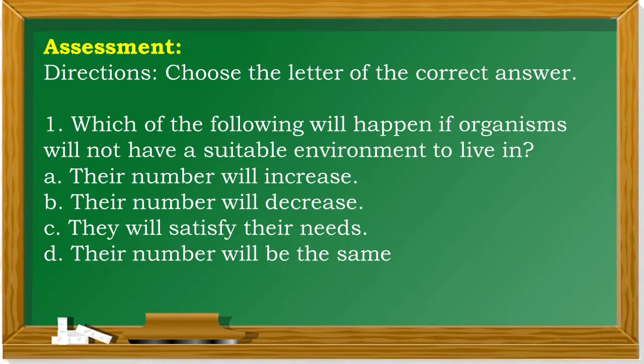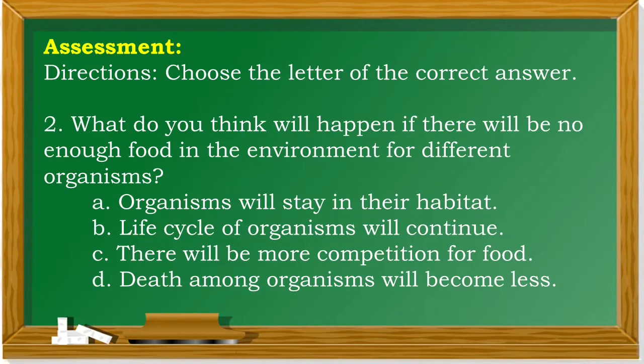Now let us answer the assessment. Number 1: Which of the following will happen if organisms will not have a suitable environment to live in? A. Their number will increase. B. Their number will decrease. C. They will satisfy their needs. D. Their number will be the same. The correct answer is letter B. Number 2: What do you think will happen if there will not be enough food in the environment for different organisms? A. Organisms will stay in their habitat. B. Life cycle of organisms will continue. C. There will be more competition for food. D. Death among organisms will become less. The correct answer is letter C.